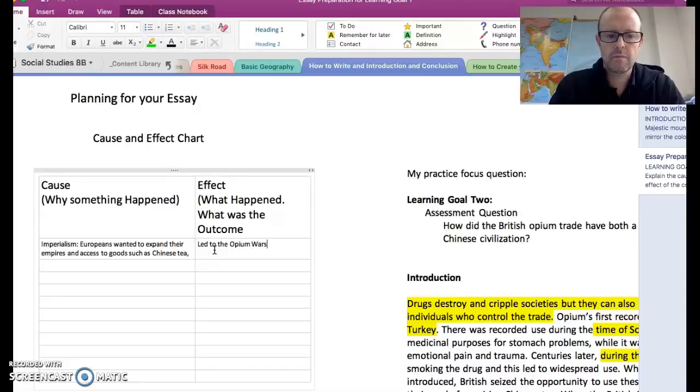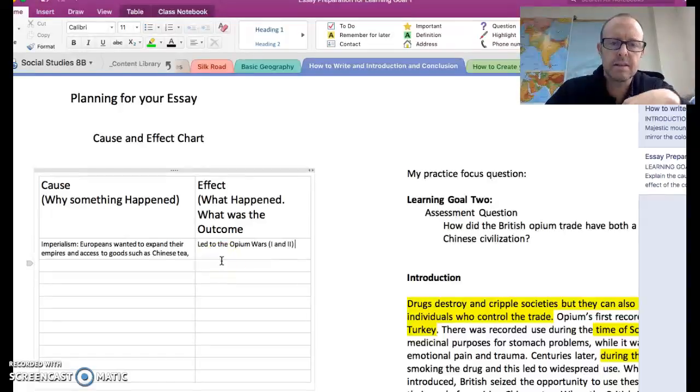What other wars did this lead to? And this led to the Opium Wars. Was there any other impact? Was there something else that was connected since the Europeans were in there? What else did this lead to?